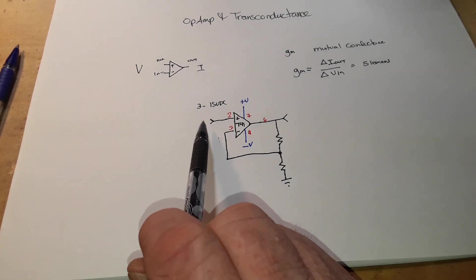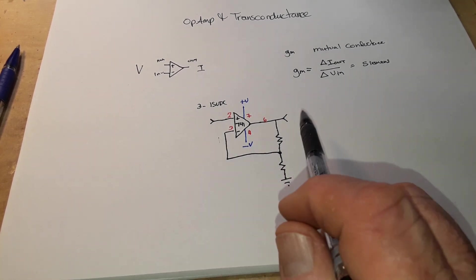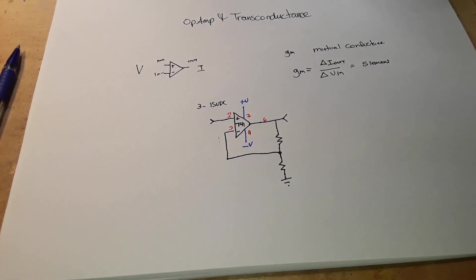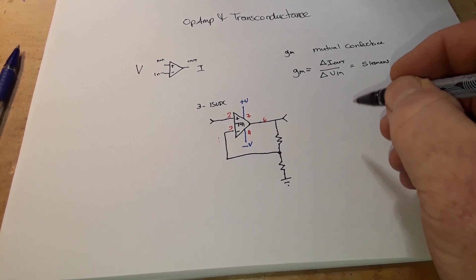So what's going to happen is when we put a voltage here, we're going to get a current out there. So we know our op amp formulas, right?